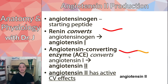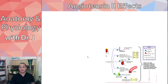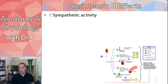Angiotensin 2 is the one that has active cardiovascular effects in terms of increasing blood pressure. It is the shortest peptide of the three and is the active one. Angiotensin 2 has a multi-pronged attack — it does many different things.